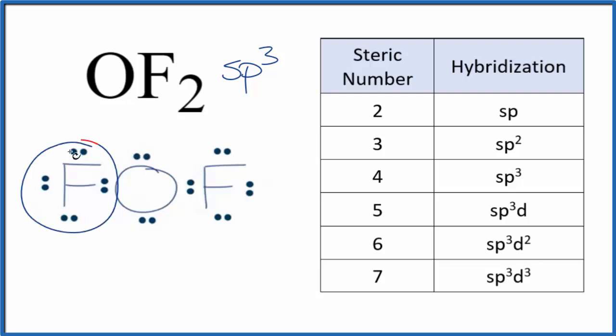So we have one, two fluorine atoms, they're bonded, and then the lone pairs on the central oxygen. We have one, two, three, four. Steric number of four, sp3. So that's one way you can figure out the hybridization of OF2.